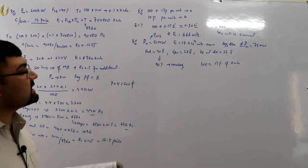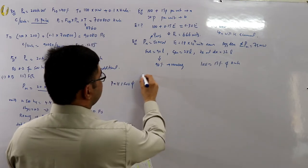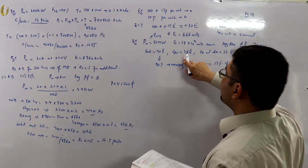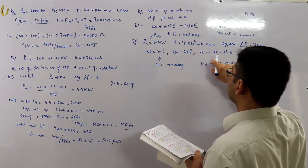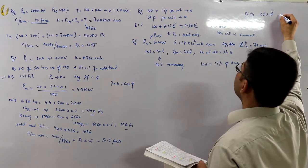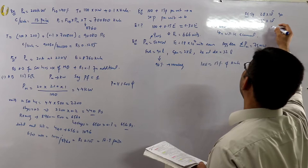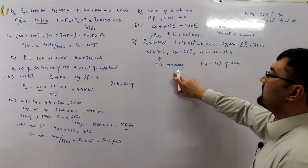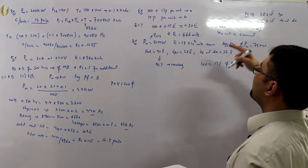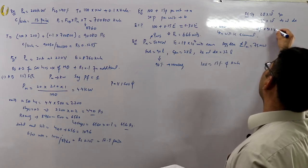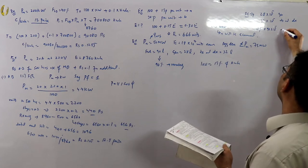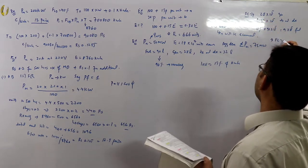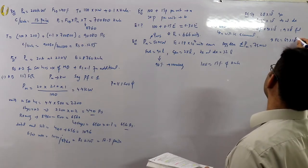Find annual fixed charges first. Fixed charges include generation cost (28 × 10⁵), transmission and distribution cost (32 × 10⁵), and 10 percent of fuel (9 lakhs). Total fixed charges = 69 lakh rupees.